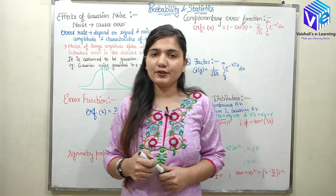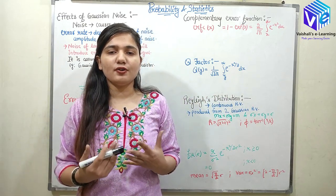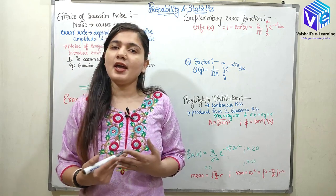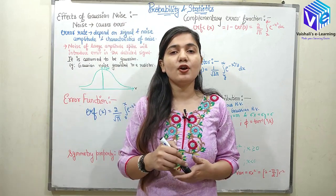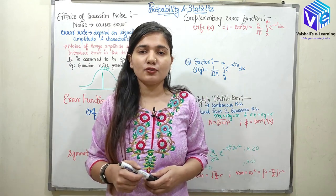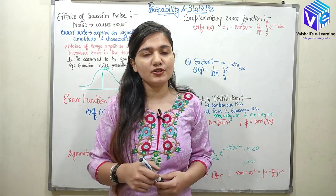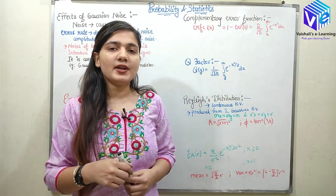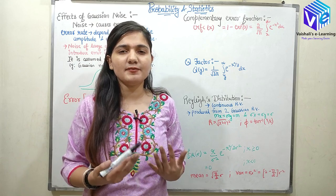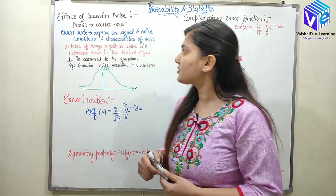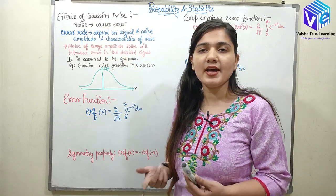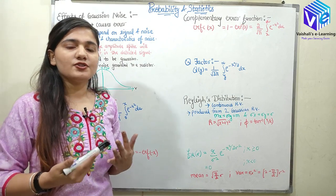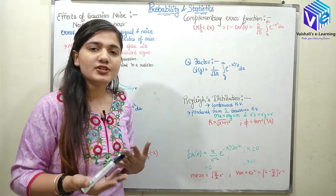We will start with the effect of Gaussian noise. The word 'Gaussian noise' comprises two parts: Gaussian and noise. I have already discussed Gaussian PDF in my previous video on Gaussian distribution. Now, noise is something which is causing error in the system, and Gaussian noise is noise which is of the Gaussian nature.